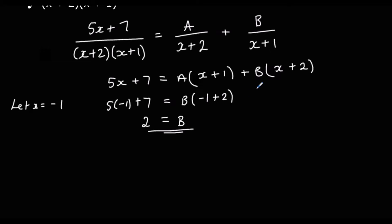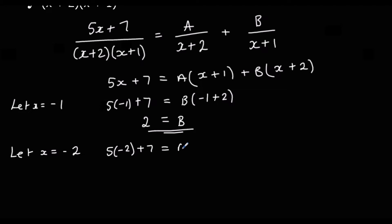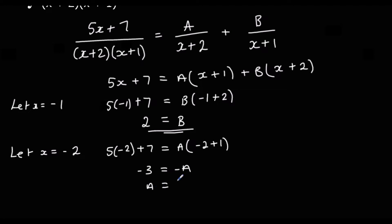Then we find A by eliminating B. We let x equal negative 2, giving us 5(-2) plus 7 equals A times (-2 plus 1), and B times 0 is eliminated. So negative 10 plus 7 gives negative 3, equals negative 1a. If negative 3 equals negative a, then A must be 3.